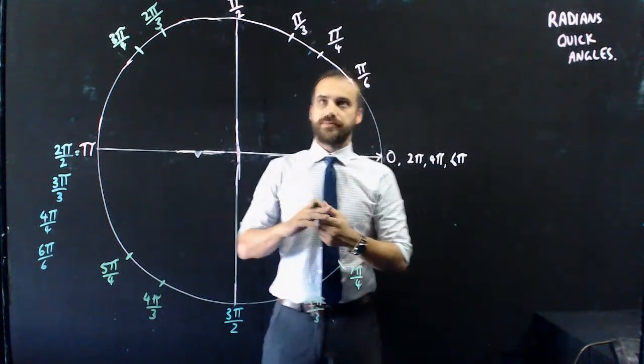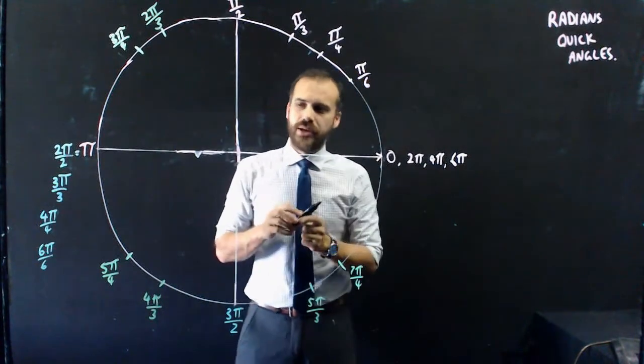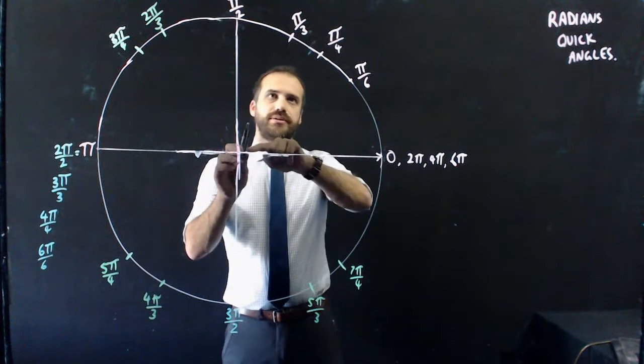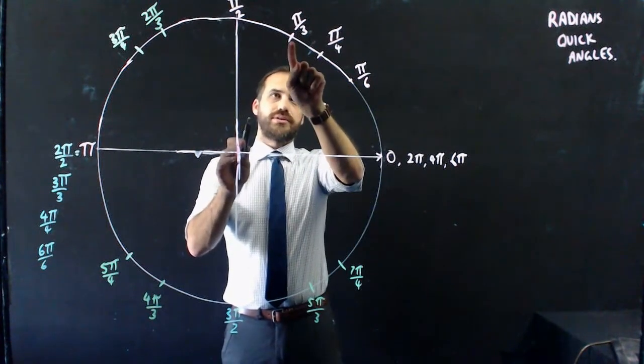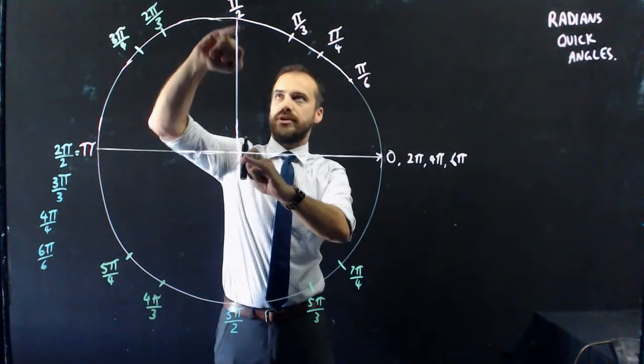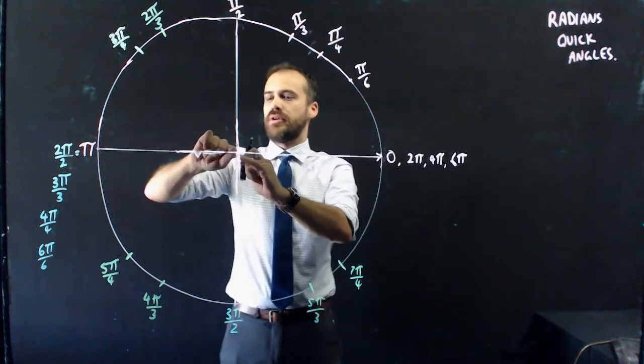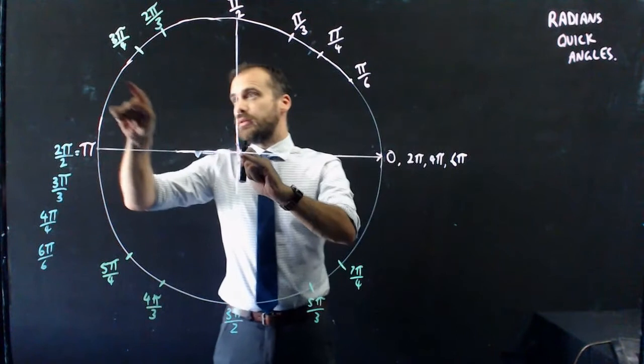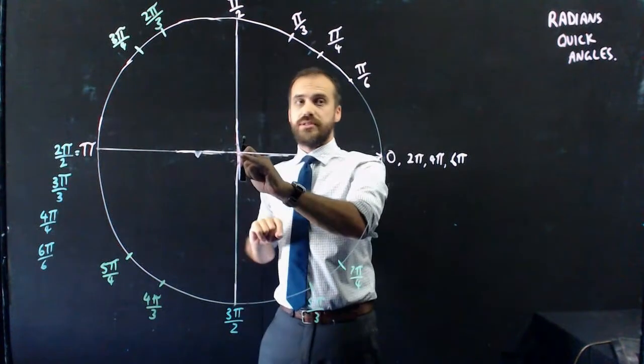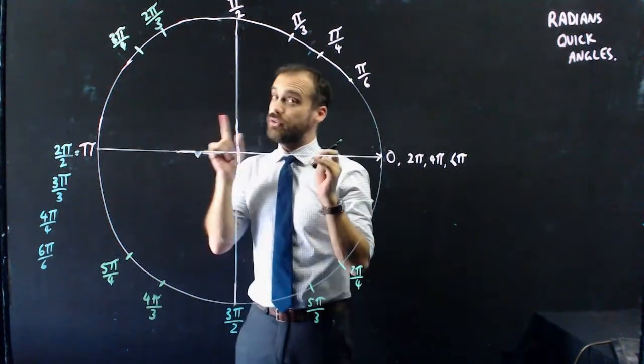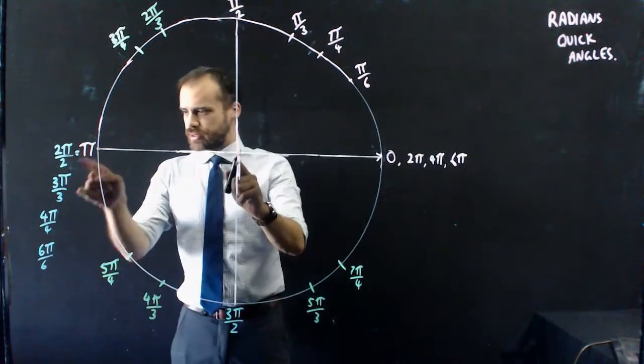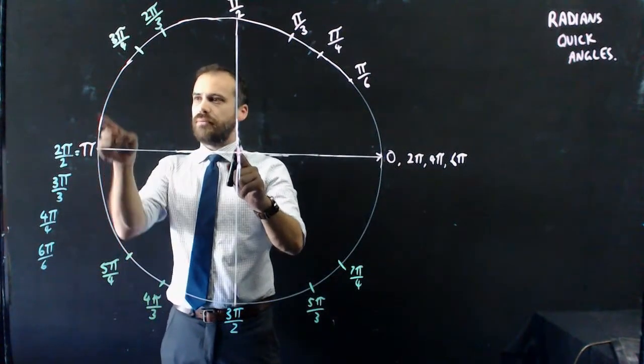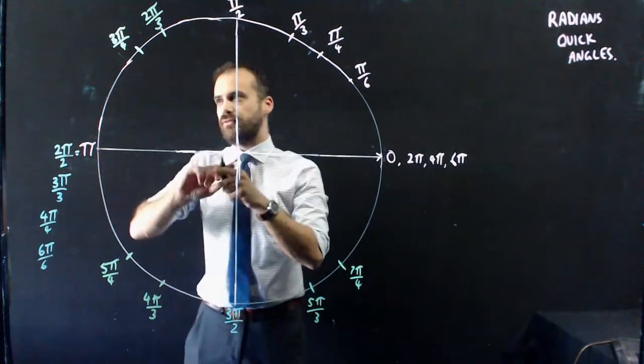And finally, let's finish it off with the π/6s. This is an interesting one. π/6, 2π/6, 3π/6, 4π/6, which is the same as 2π/3, 5π/6. That was a long way to count, so I should have gone the other way. 6π/6 minus π/6 is 5π/6.